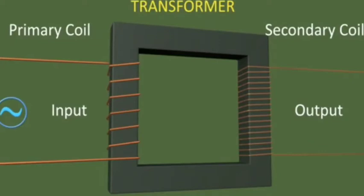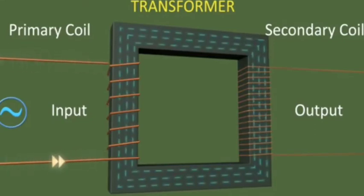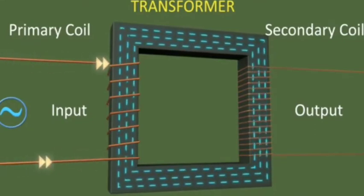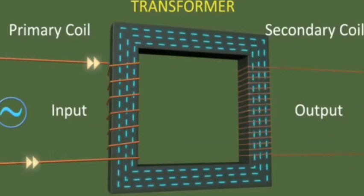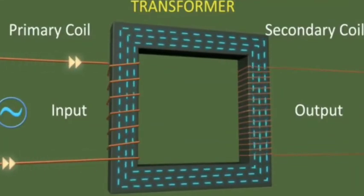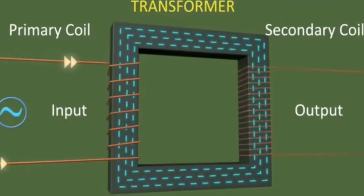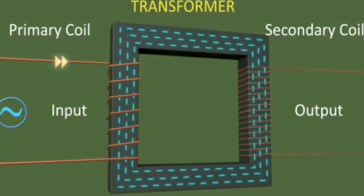When we apply an AC EMF to the primary coil and an AC current flows, a magnetic field is created. This magnetic field continues to change because the AC direction continues to change.